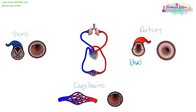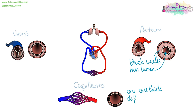Arteries have very thick walls because they are carrying blood under high pressure, which means they have a thin lumen — that's the gap in the middle. Capillaries are very, very small — they are only one cell thick, to allow for diffusion. They generally go around in a mesh network around things like the guts, around the villi in the gut, around the alveoli in the lungs, so they have a large surface area. The veins carry deoxygenated blood and carry it back to the heart, so they have valves. They have thin walls and a thick lumen because they're carrying blood under low pressure.